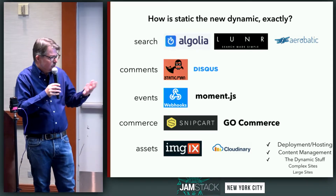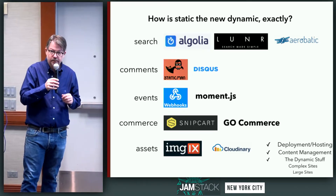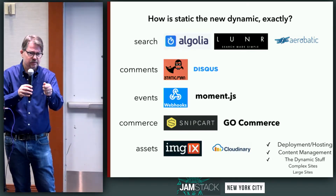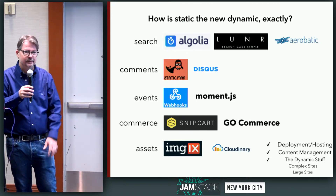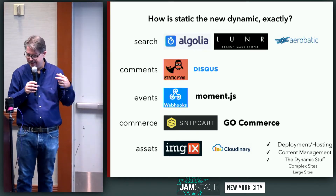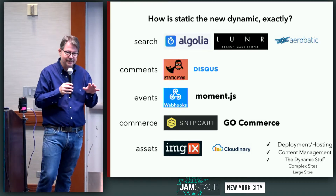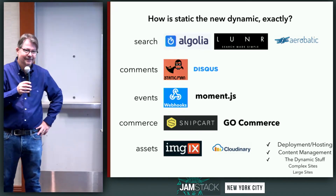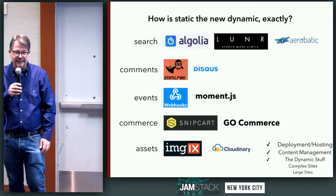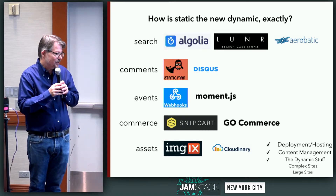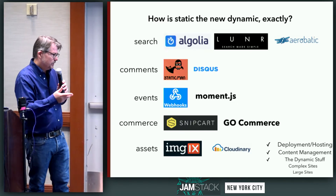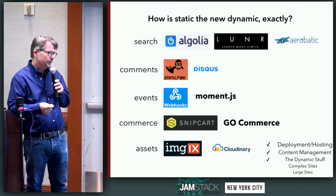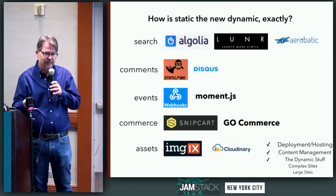Commerce and assets — I think commerce is a bit open still. Snipcart works really beautifully. GoCommerce is kind of one of the big nuts to crack, still in progress. That space is getting there and I predict there's going to be a lot more happening. For asset management, these are CDN-type solutions — I use Imgix and Cloudinary primarily, either for the Cloudinary user interface or to add query strings to my assets.